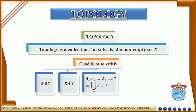That is, if we consider an arbitrary collection, that is a1, a2, etc., an, etc., in T, then their union — that is, the union over i of ai — should belong to T.